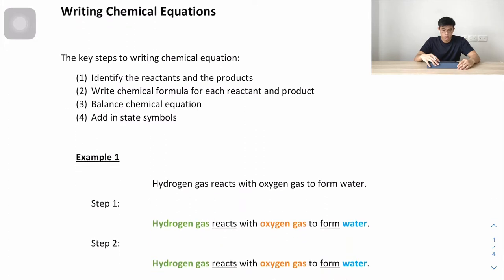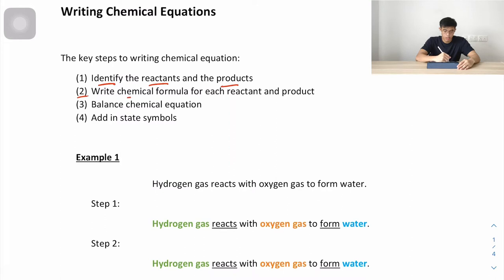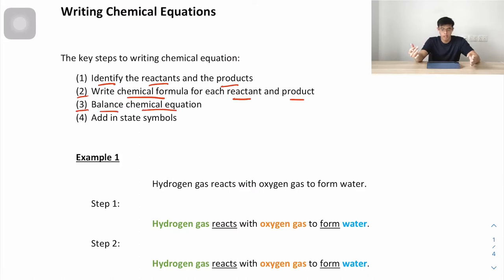The key steps in writing a chemical equation: the first step is to identify the reactants and products. Second is to write down the chemical formula for each reactant and product. Third is balancing the chemical equation, and lastly, to add in the state symbols.